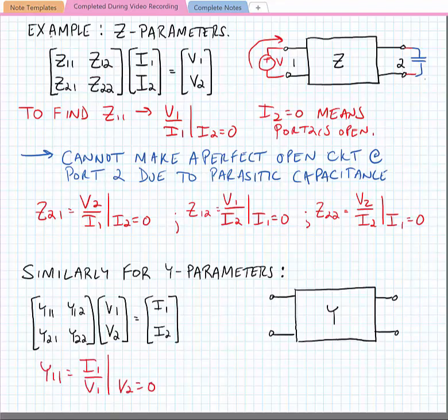For instance, if we were looking for y11, the input admittance, it would be equal to i1 over v1 when v2 is equal to 0. That would mean in principle that we would want to short port v2 and measure the voltage at port 1 if we were to put a current into port 1.